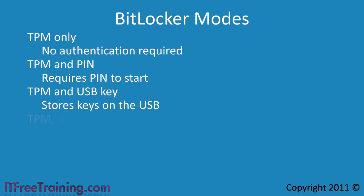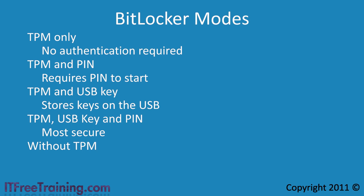If you want more security, you can use the TPM chip with a USB key and a PIN. This is the most secure form of security. Lastly, if you do not have a TPM chip in your computer, you can use the computer with just a USB key. Regardless of which method you use, if you don't have the correct key or keys, or the operating system boot process changes — for example the BIOS is upgraded — the computer will go into TPM recovery mode. This mode allows you to recover your system in the event that you lose your key or change your hardware.